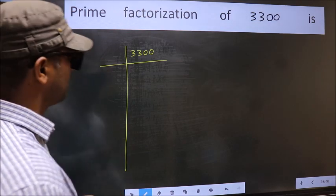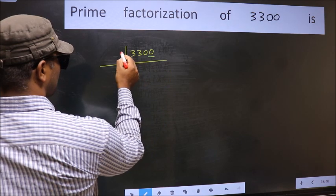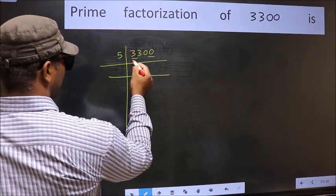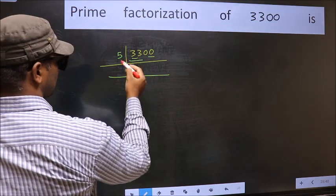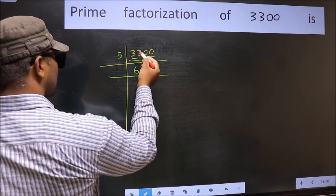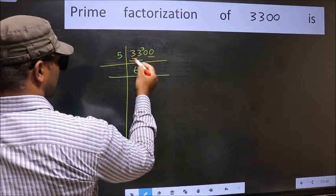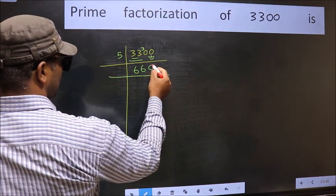Next, in this number, last digit is 0, so take 5. First number 3, smaller than 5, so take 2 numbers, 33. A number close to 33 in 5 table is 5 times 6, 30. 33 minus 30, 3 carried forward 30. When do we get 30 in 5 table? 5 times 6, 30. This 0 as it is down.